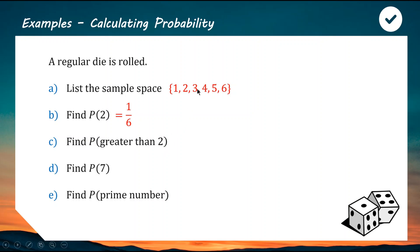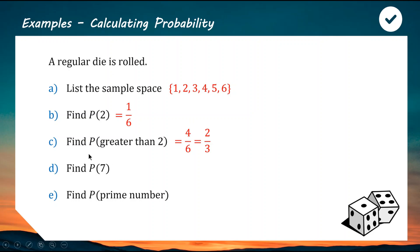Finding the probability of obtaining a number greater than two — that could be three, four, five, or six, so that's four elements out of six. It's good manners to simplify your answers, so four over six simplifies to two over three. For question d, the probability of obtaining a seven: seven is not an element of our sample space, so the probability is zero — impossible.